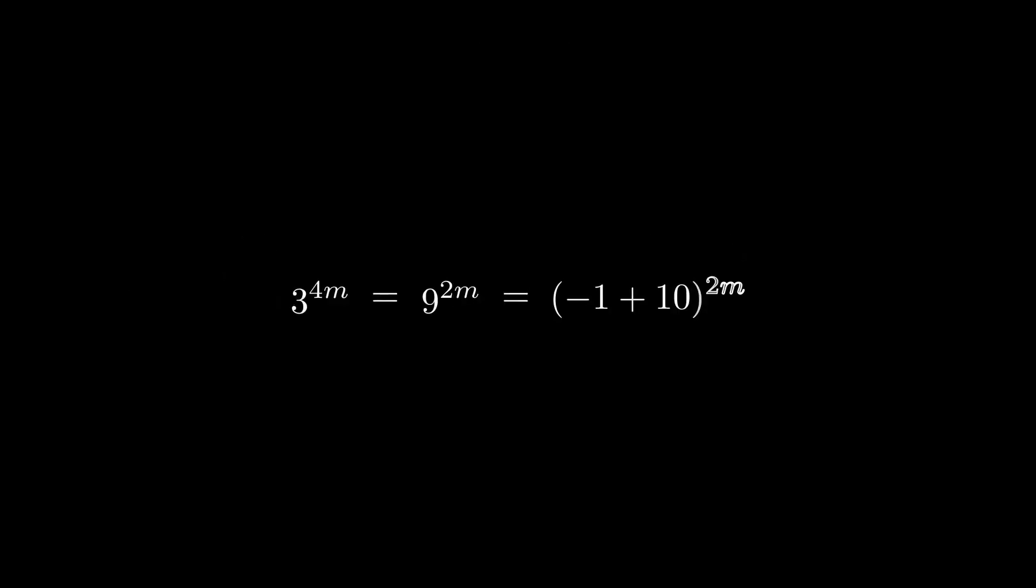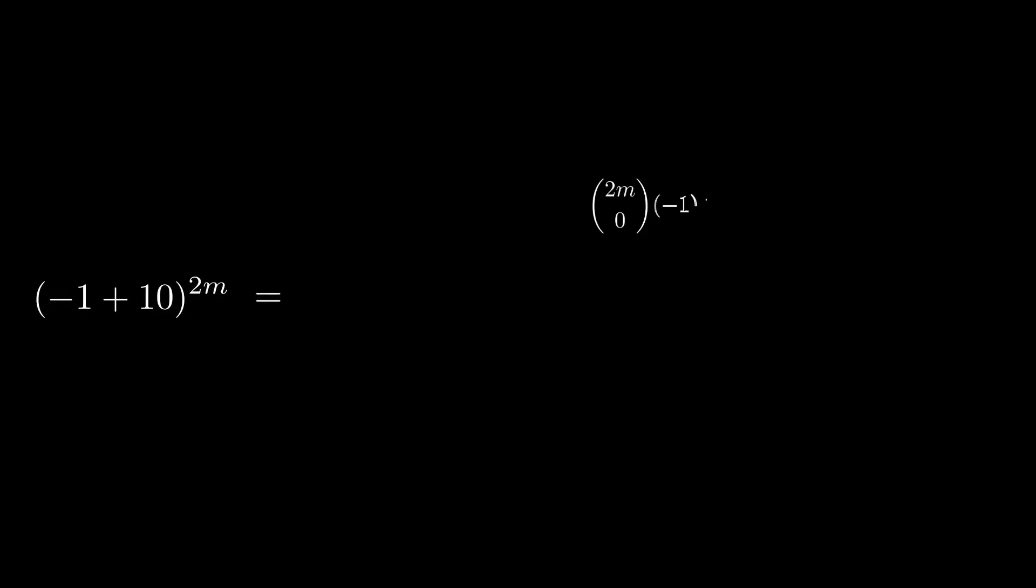Consider an integer power of the form 4m, where m is a positive integer. This can be written as 9 raised to the power 2m, which can further be expressed as minus 1 plus 10 raised to the power 2m. Using the binomial theorem, we can expand this.